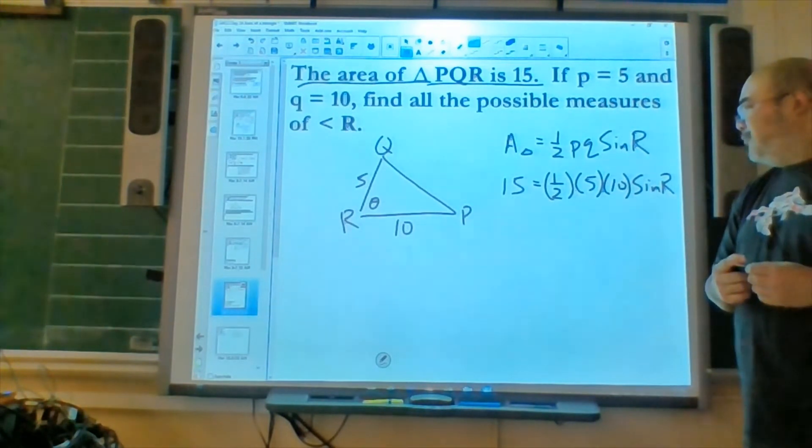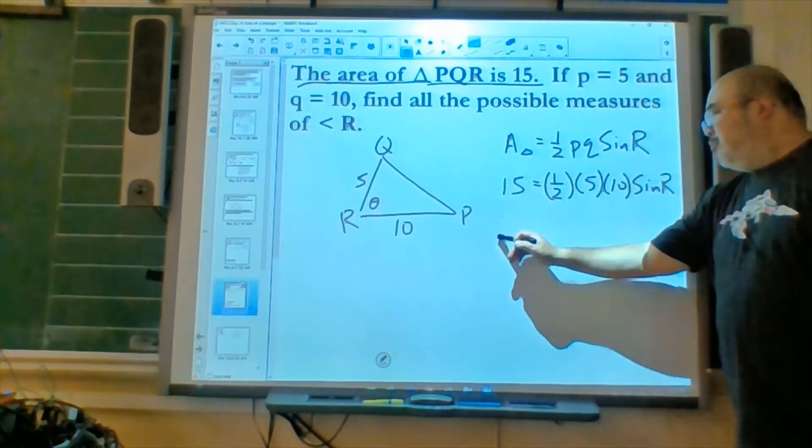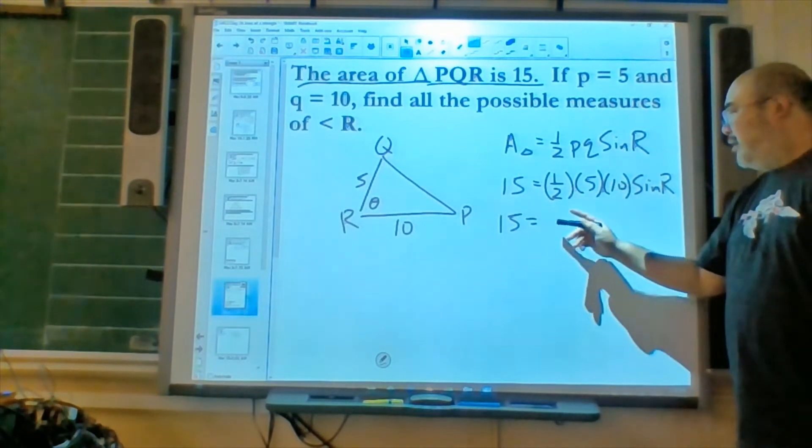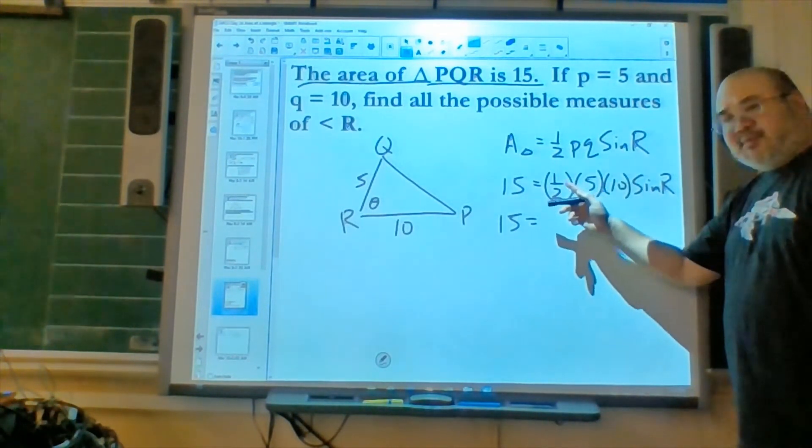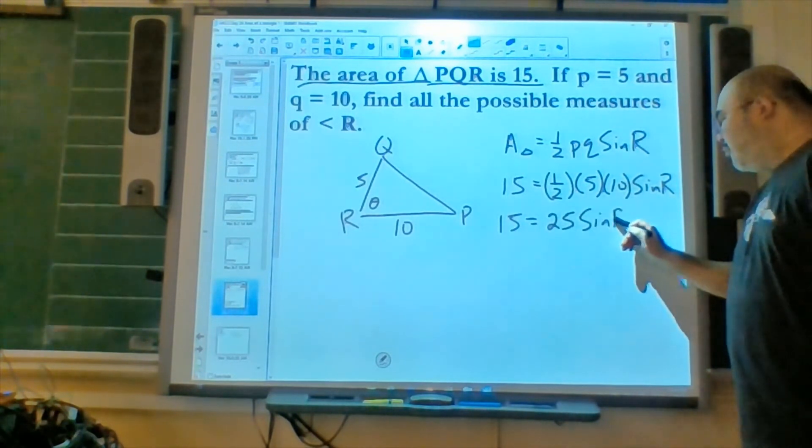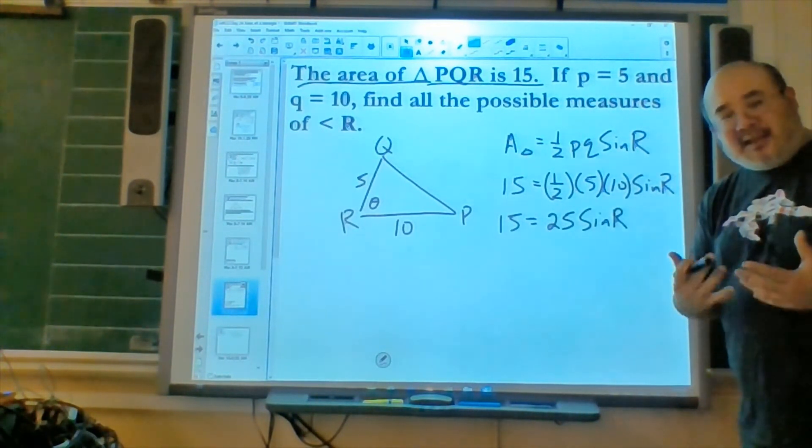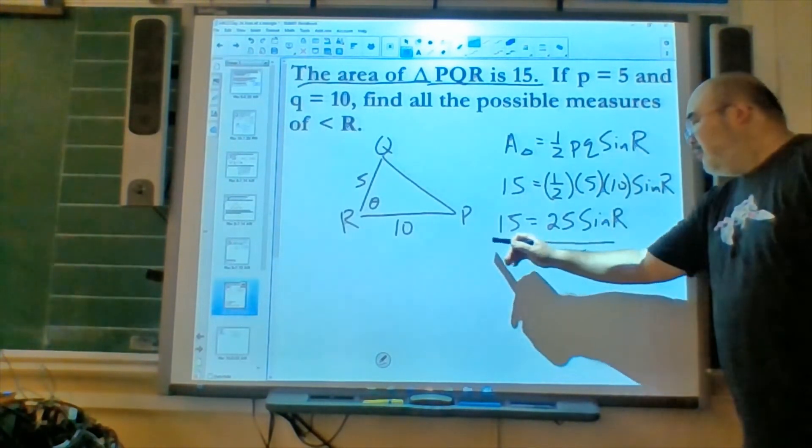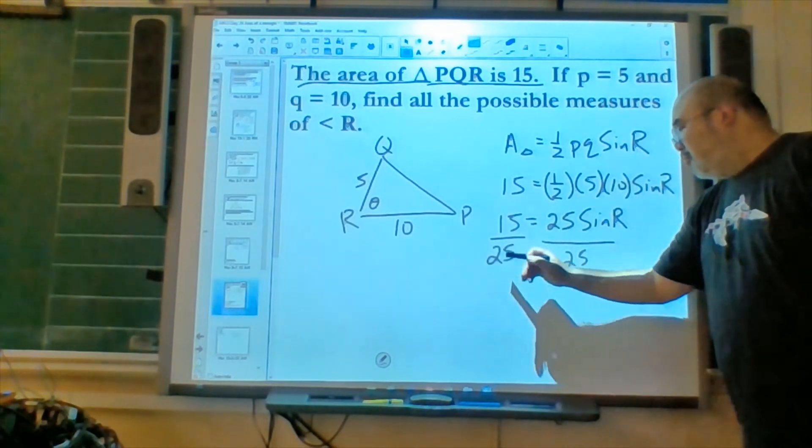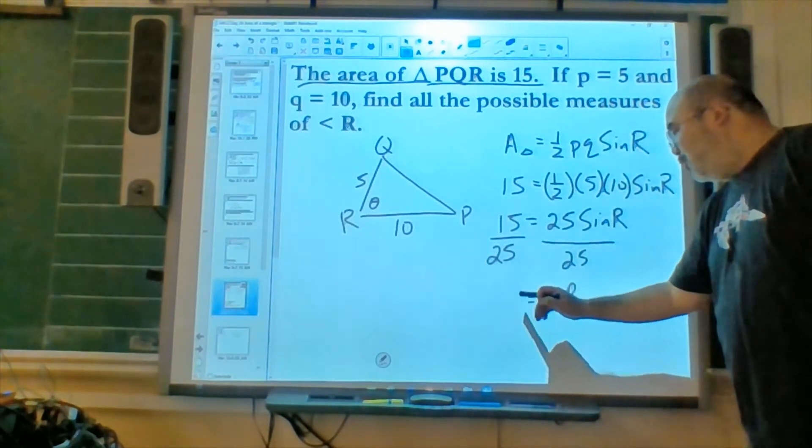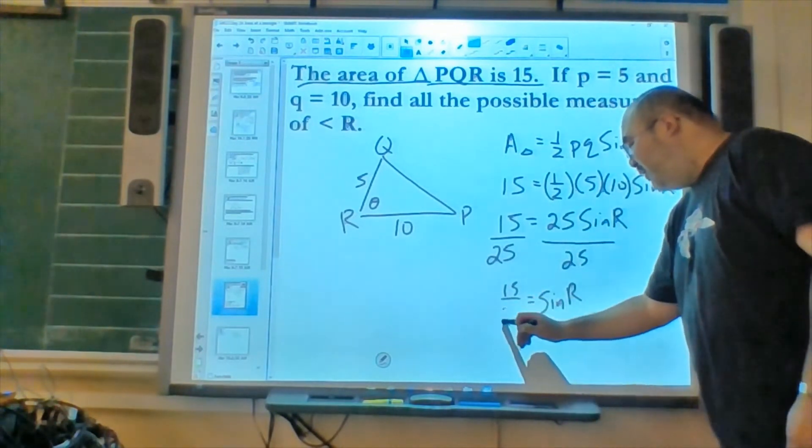Now we fill in, and we see that the area is 15 equals one half, P is 5, and Q is 10. We want to find the sine of R. So, let's see now. I know I can multiply out the half times the 5 times the 10, and get, well, 50 times one half is 25 sine of R. Since we're trying to find the sine of the angle, we're going to find the ratio by dividing both sides by 25.